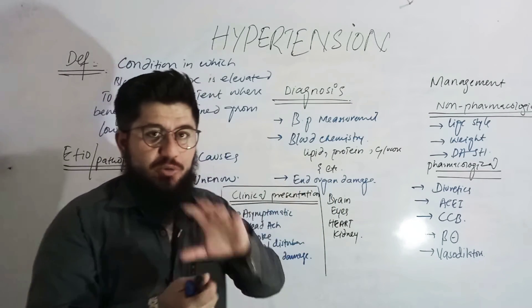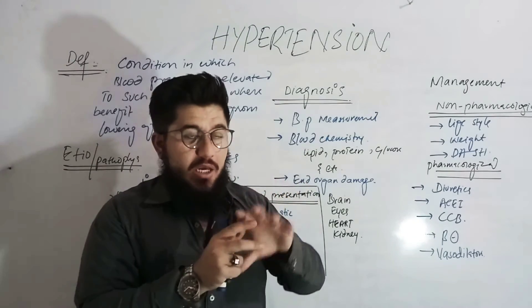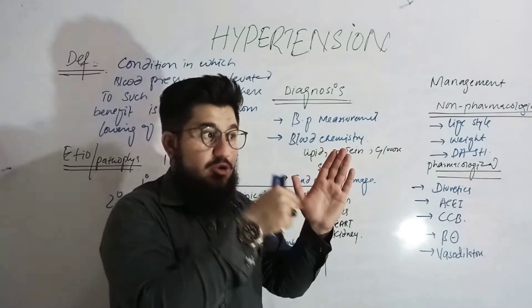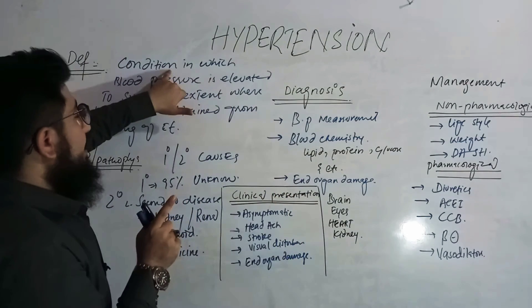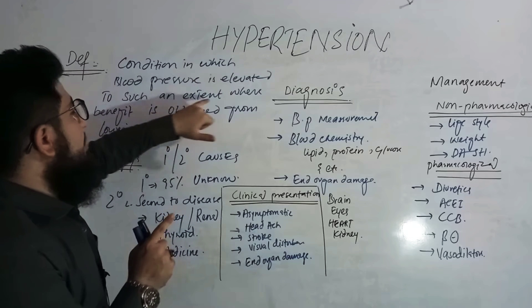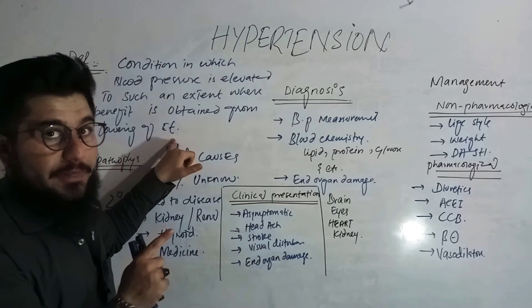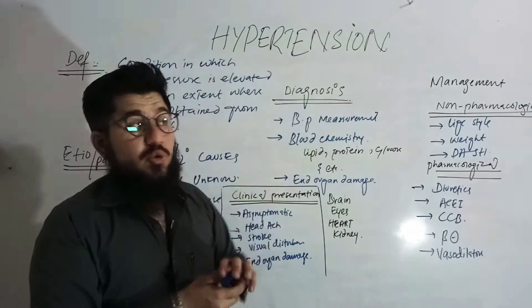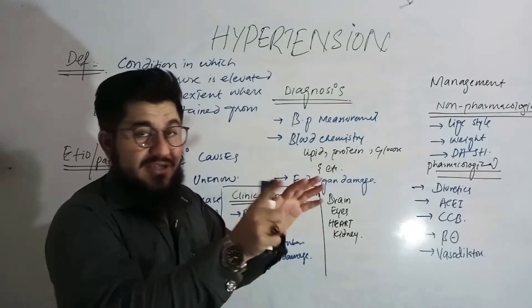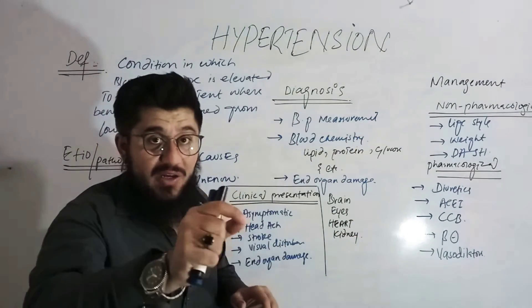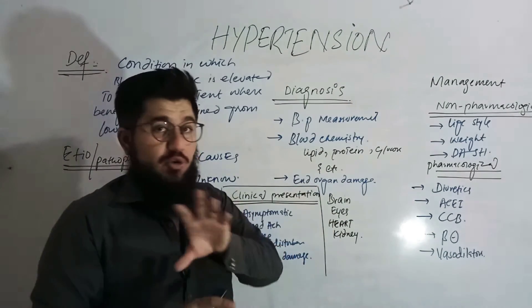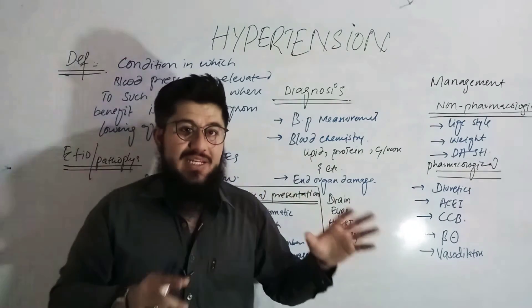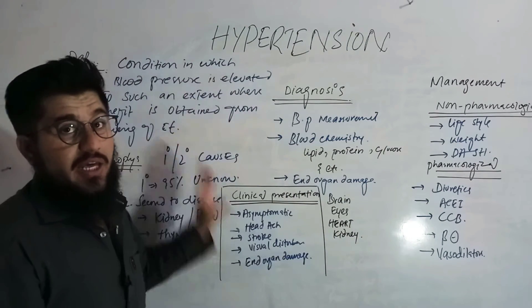Simply put: if in any patient the blood pressure is high enough such that lowering that high value benefits the patient, that is called hypertension. If you write the definition with values, you are specifying toward a particular patient. The definition should fit each and every case — a condition in which blood pressure is elevated to such an extent where benefit is obtained from lowering of it.